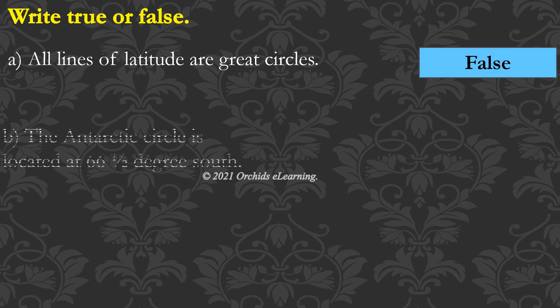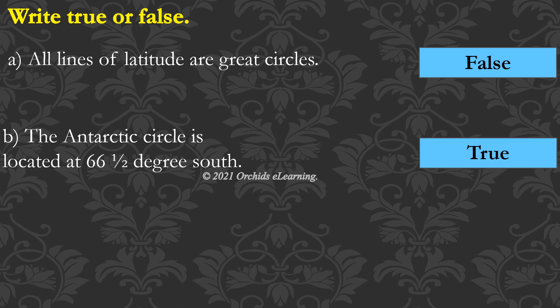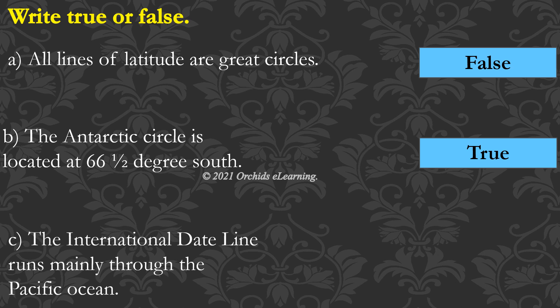The Antarctic Circle is located at 66.5 degrees south. True. The international date line runs mainly through the Pacific Ocean. True.